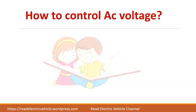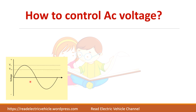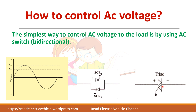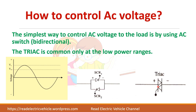To control AC voltage, we need devices that can conduct in both the positive and negative half cycles — that is, a bidirectional switch. Thyristors can be used by connecting two devices in anti-parallel: SCR1 conducts during the positive half cycle and SCR2 during the negative half cycle. Alternatively, a TRIAC can be used. TRIACs are preferred for low power ranges, while SCRs are used for high power applications.